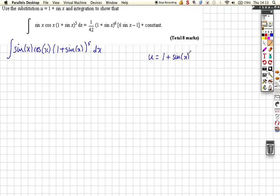We've got to replace all the x's basically with u's or some function of u, and we need to replace dx as well. So du by dx is equal to, well that goes to 0, sine differentiates to cos, cos x. If you want to rewrite that, we get du over cos x is equal to dx.